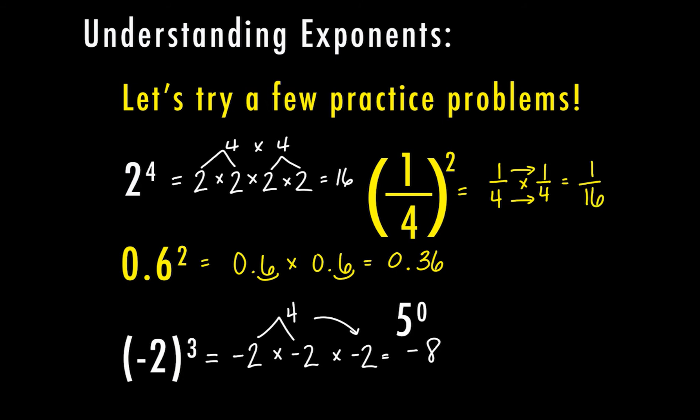And last, we have 5 to the 0 power. This one is tricky because it's to the 0 power. But any number, base number, to the 0 power equals 1. And that is always, always going to be true. So any number raised to the 0 power just equals 1.